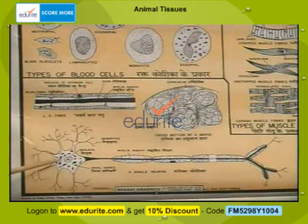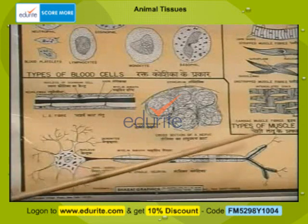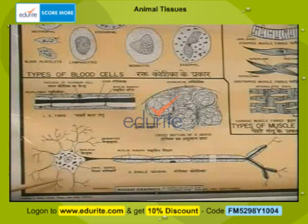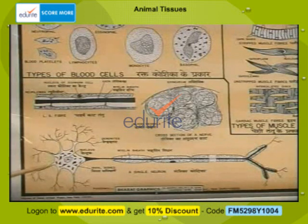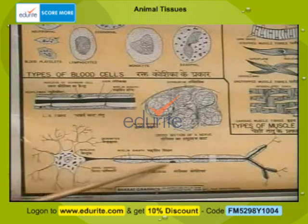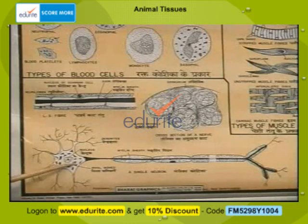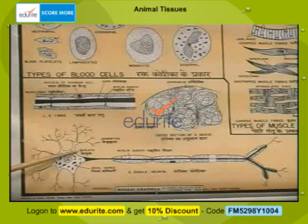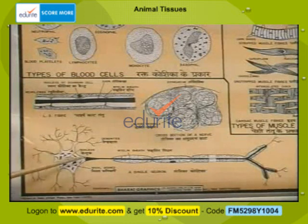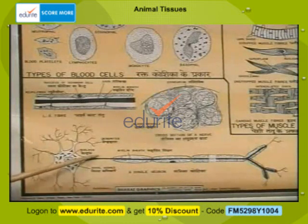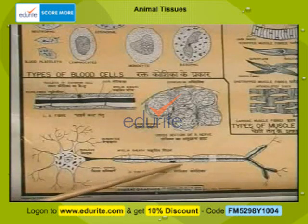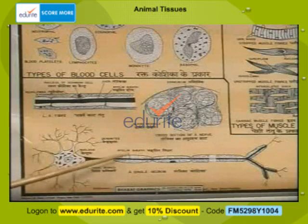Nervous tissue is the next kind of animal tissue. The cells that make up the nervous tissue are called neurons. Nervous tissue is found in the brain, the spinal cord, and the nerve fibers. Each neuron consists of two distinct parts: the cytone or the head of the cell, and the axon or the tail of the cell. The cytone has a prominent nucleus, a number of granules in the cytoplasm, and a number of branches called dendrons or dendrites. The axon or tail of the neuron sometimes has a protein covering around it called the myelin sheath.